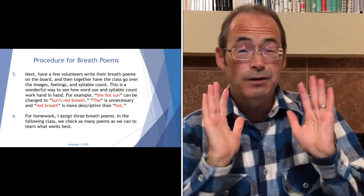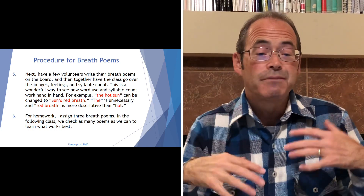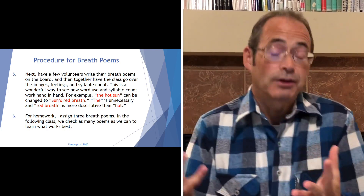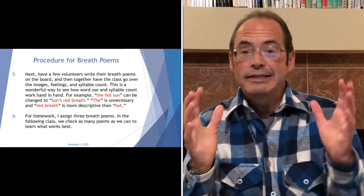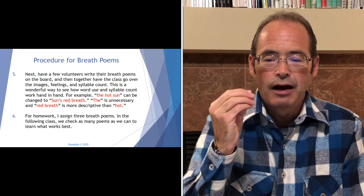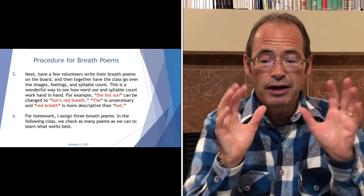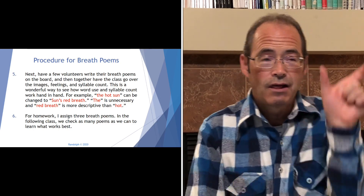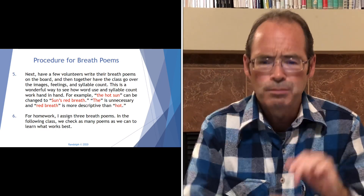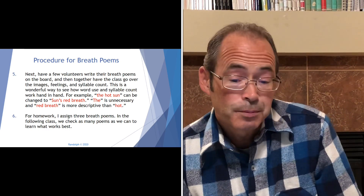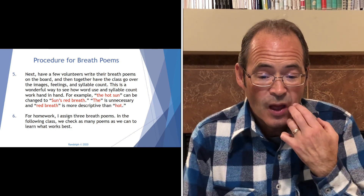Step five — I can't stress enough number five: have a few volunteers write their breath poems on the board, and then together have the class go over the images, feelings, and syllable count. This is a wonderful way to see how word use and syllable count work hand in hand. For example, 'the hot sun' could be changed to 'sun's red breath' — 'the' is really unnecessary and 'red breath' is more descriptive than 'hot.' That was an actual example from a student's poem where the class decided 'red breath' was a lot more potent. For homework, assign three breath poems, and in the following class check as many poems as possible to learn what works best.